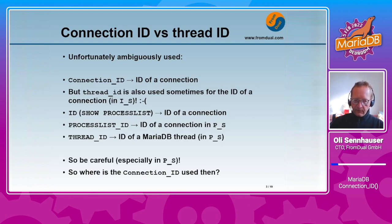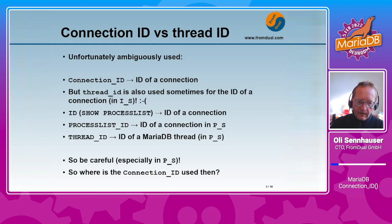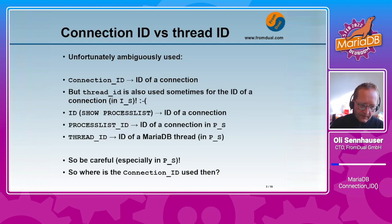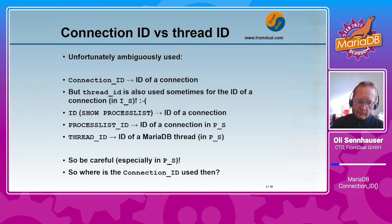This typically happens in the information schema. Sadly they don't use the same term. In SHOW PROCESSLIST there is a column called ID — this is the connection ID as well. And in the performance schema we have the connection ID again, but here it's called process list ID. It's still the same connection ID in MariaDB.